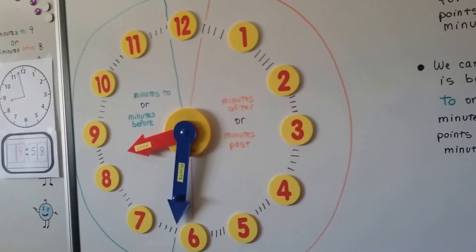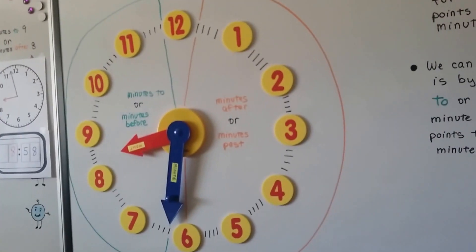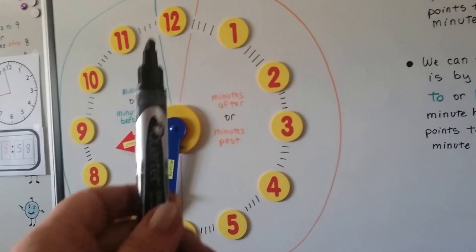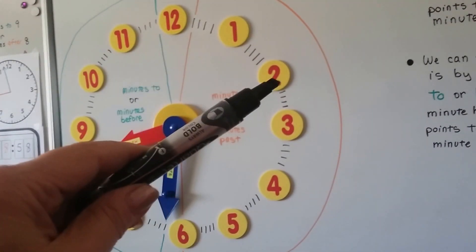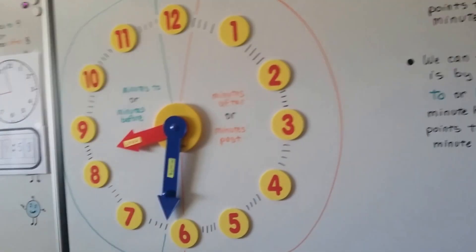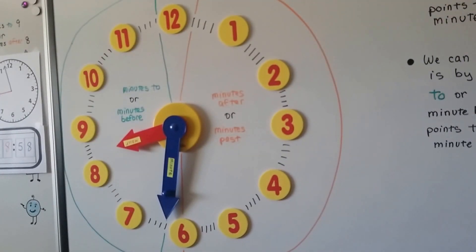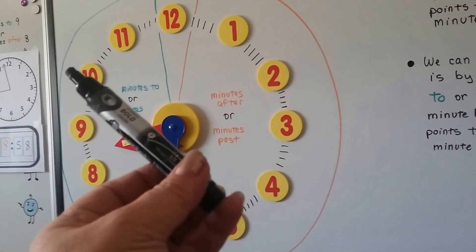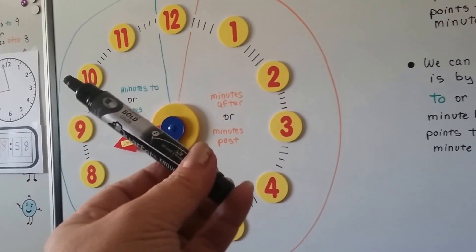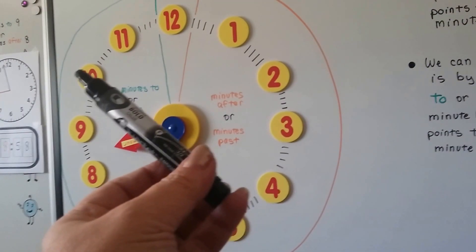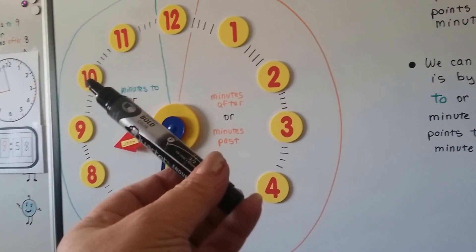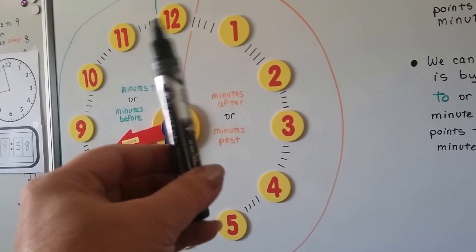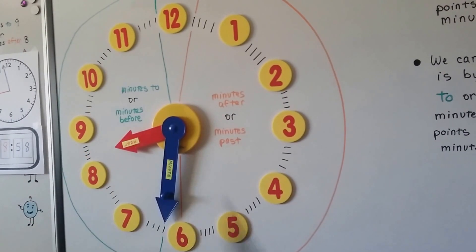So if someone says to you it's 10 past 8, you know they're saying it's 8:10 — 10 minutes past 8 o'clock. And if they say it's 10 minutes to 9, you know the minute hand is right here, and there are 10 more minutes until it's at the o'clock.